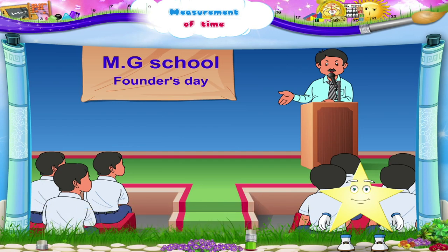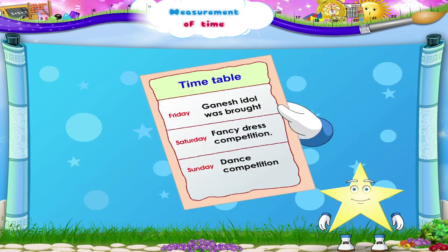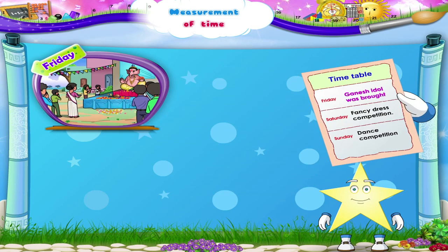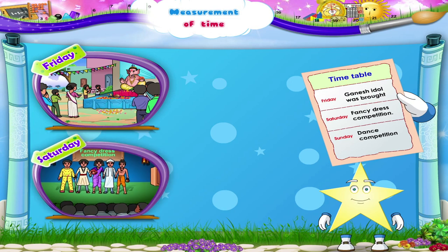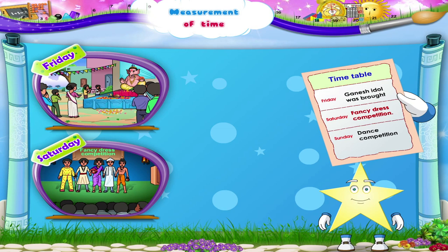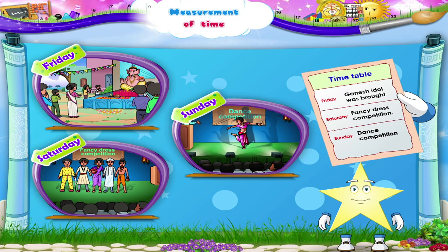Hey Starry! Look at the notice sent by the society. It shows the timetable for the Ganesh festival. The Ganesh idol was brought on Friday. On Saturday, there is a fancy dress competition. Yes, there is a dance competition also, and it is on Sunday. I am sure you have understood the days of the week. Let's do an activity now.